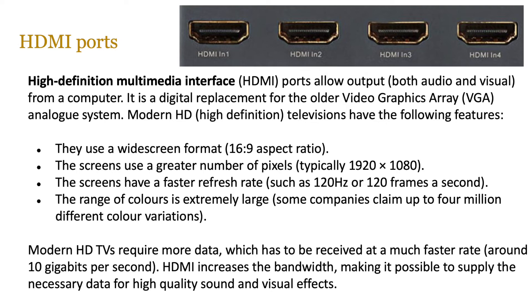The range of colors is extremely large — some companies claim millions or 4 million different color variations, true color, and all sorts of combinations in between. Modern HD TVs require more data to be received at a much faster rate, normally 10 gigabits per second. That means we need increased bandwidth, and HDMI provides that, making it possible to supply all the necessary data for high quality sound and visual effects. With the advent of streaming, compression plays a huge part in supporting HDMI-equivalent standards — think about how you stream 10 gigabits of raw information like a Netflix stream.